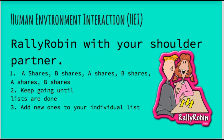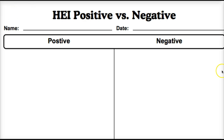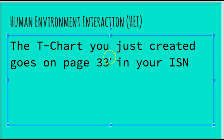Since your partner helped you out, give them a little praise — it could be just 'you're awesome' or you could do some sparkles, whatever you'd like. Now, take your sheet and trim it down a little bit. That is going to go on page 33 in your notebook, the opposite page from that foldable. When you're done, replay this video.